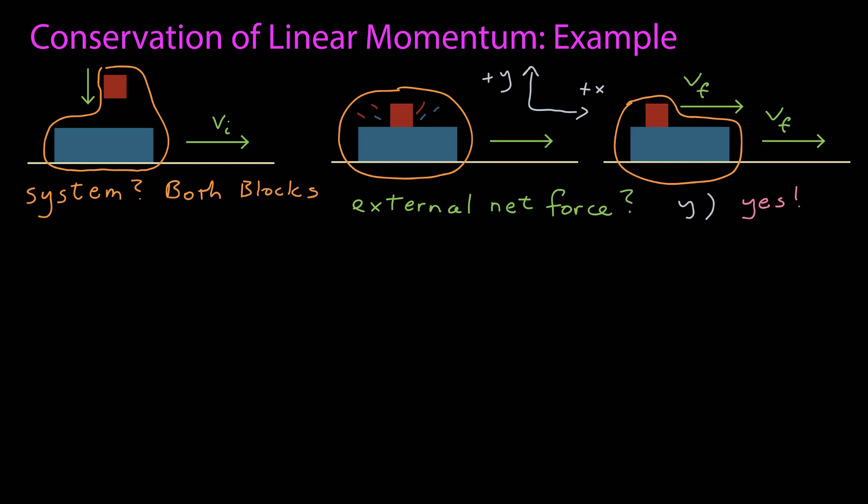In the y-axis, there certainly is a net external force. We can see the gravity is having a significant effect. When it hits, some sort of vertical force stops the red block, and that's going to correlate into additional normal forces from the ground on the blue block. Regardless, there are net external forces on the system in the y-direction, and linear momentum is not conserved in this example.